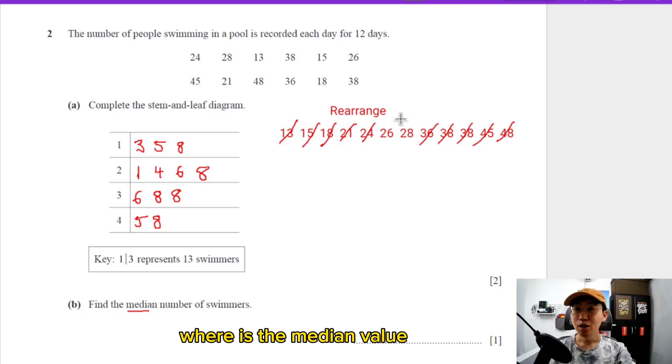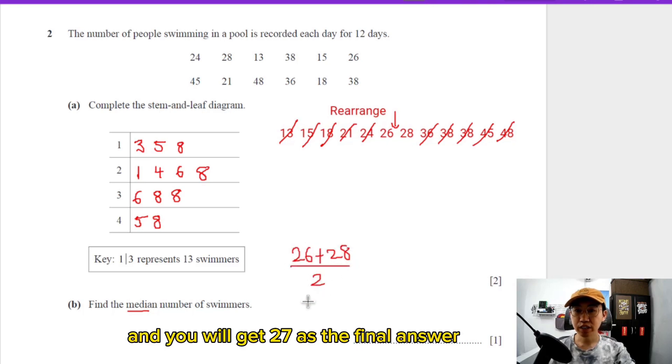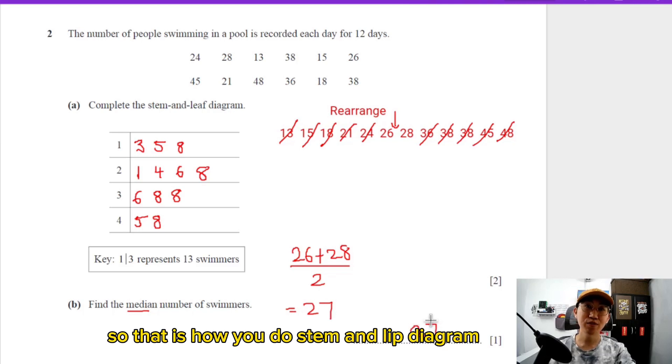Where is the median value? The median is in between 26 and 28. What you have to do is add them and divide by 2, and you will get 27 as the final answer. That is how you do stem and leaf diagrams.